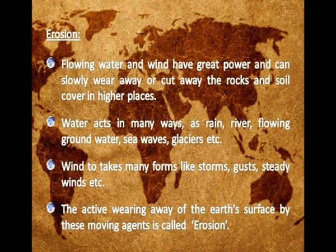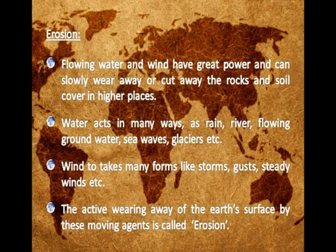Erosion: flowing water and wind have great power and can slowly wear away or cut away rocks and soil cover in higher places. Water acts in many ways — as rain, river, flowing groundwater, sea waves, glaciers, etc. Wind takes many forms like storms, gusts, steady winds, etc. The active wearing away of the earth's surface by these moving agents is called erosion.